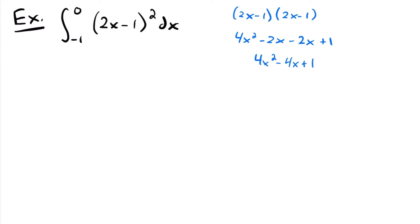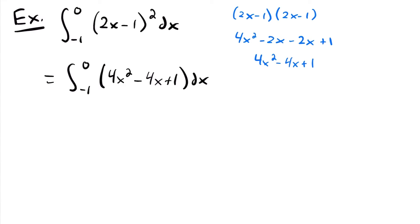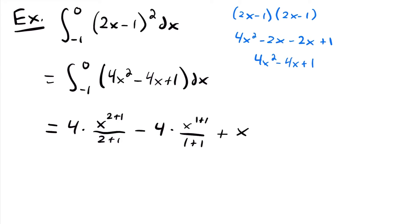So we can replace that quantity squared with this quadratic, and we'll have the integral from negative 1 to 0 of 4x squared minus 4x plus 1 dx. Now we can integrate each of these terms and find the antiderivative, then evaluate at 0 and negative 1. This will be equal to 4 times x to the power of 2 plus 1 divided by 2 plus 1, minus 4 times x to the power of 1 plus 1 divided by 1 plus 1, plus x — using the power rule for the first two terms and the constant rule for 1.